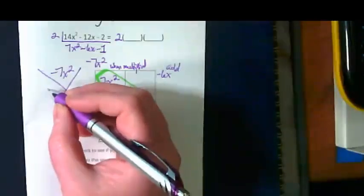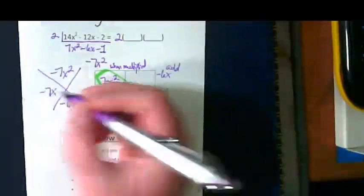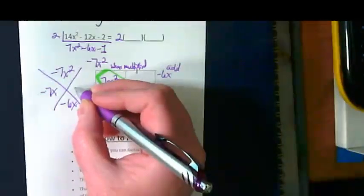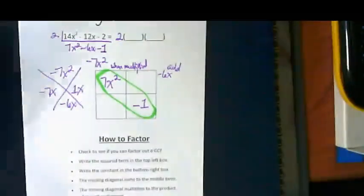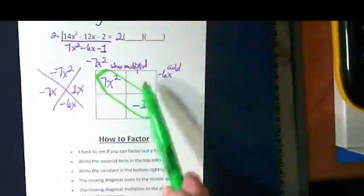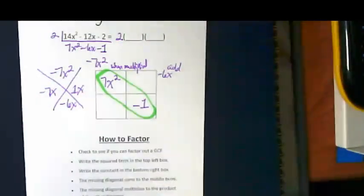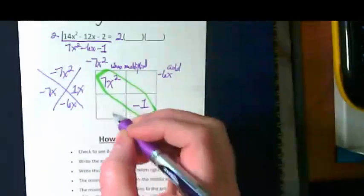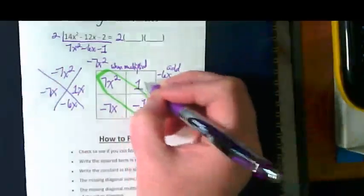I'm thinking negative 7x and positive 1x. Now, notice the difference here. We're using the x puzzle to find what goes into the box. What's in our x puzzle is not our answer to the question yet. Let's put the negative 7x here and the positive 1x here.